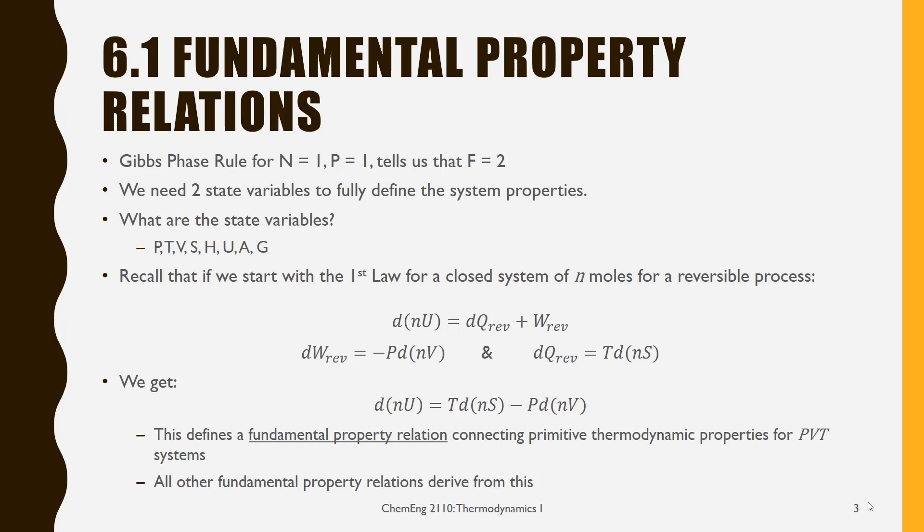Now we have Gibbs phase rule, and Gibbs phase rule says that for a pure system in a single homogeneous phase, N the number of components is 1 and P the number of phases is 1. I don't have any reactions, and so the degrees of freedom is 2 plus the number of components minus the number of phases. Those are both 1, so I end up with 2.